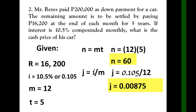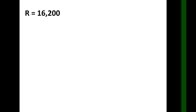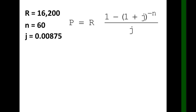Then write the new given: R equals 16,200, n equals 60, and j equals 0.00875. So these are our givens. This is our formula from a while ago that we used in example number 1.